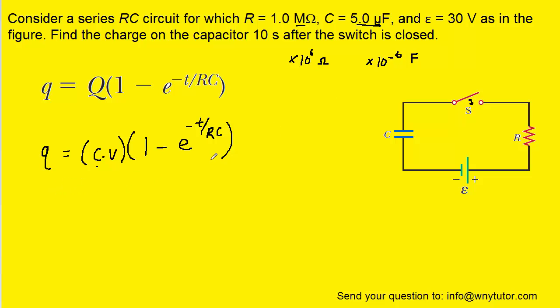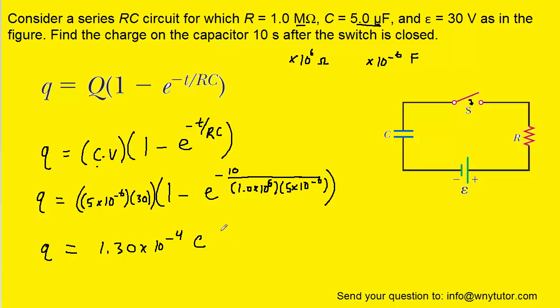So we'll go ahead and plug in all the known values. And when you carefully plug that into your calculator, you should get a charge on the capacitor of approximately 1.30 times 10 to the minus 4 coulombs.